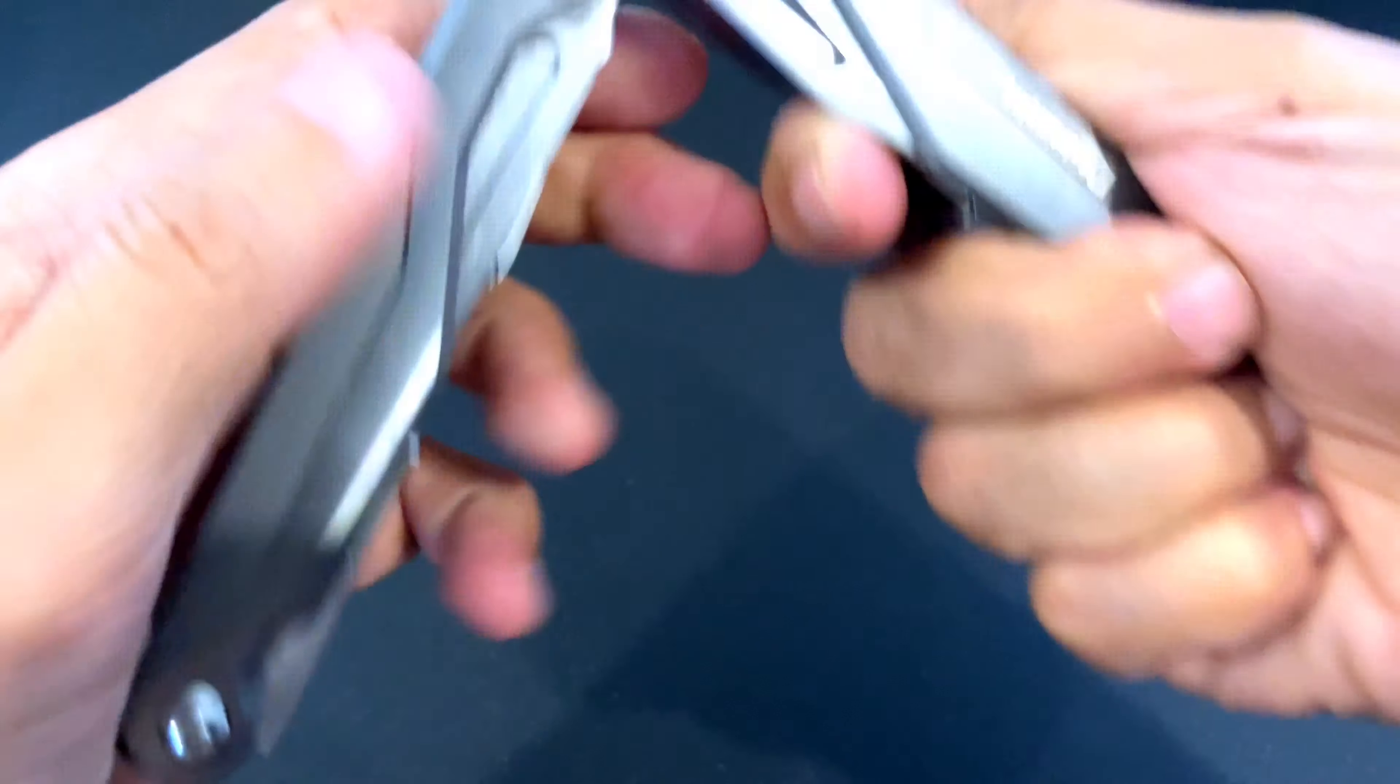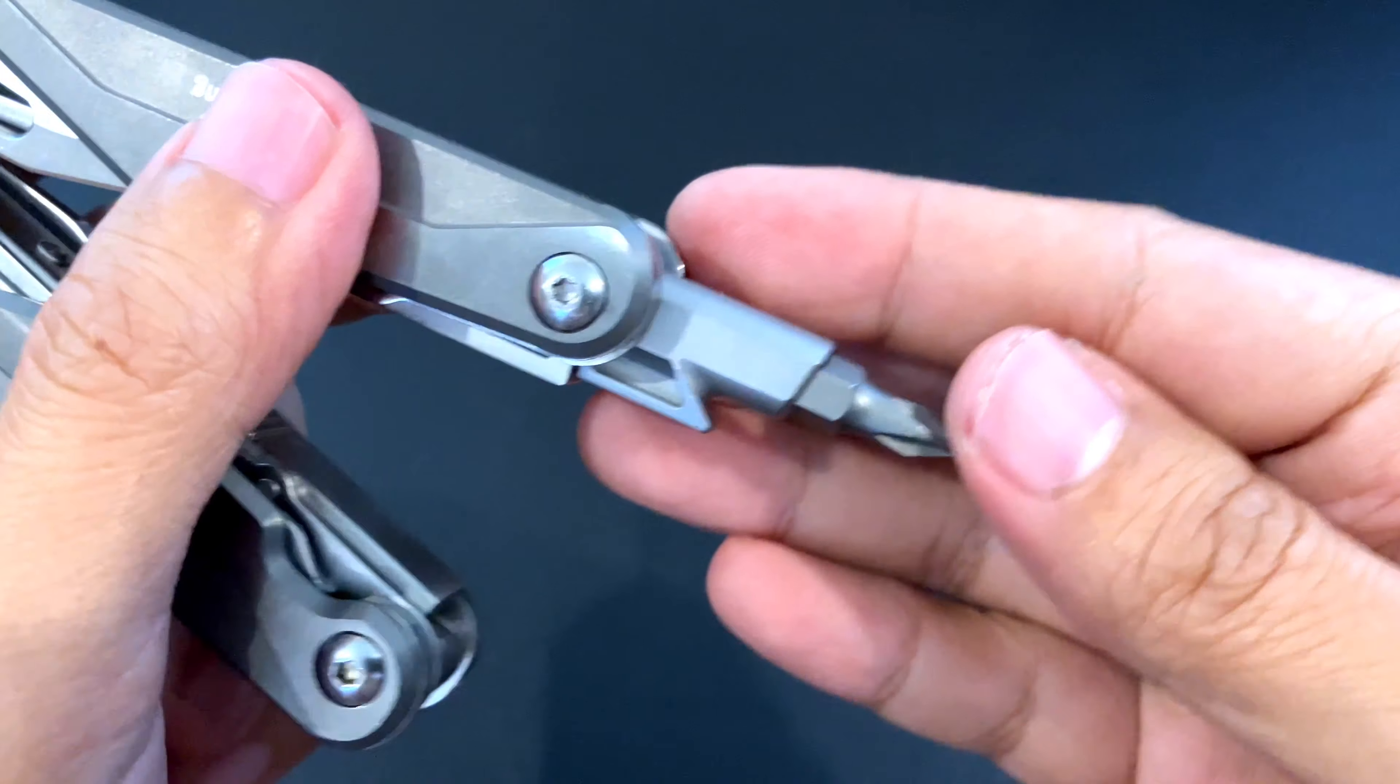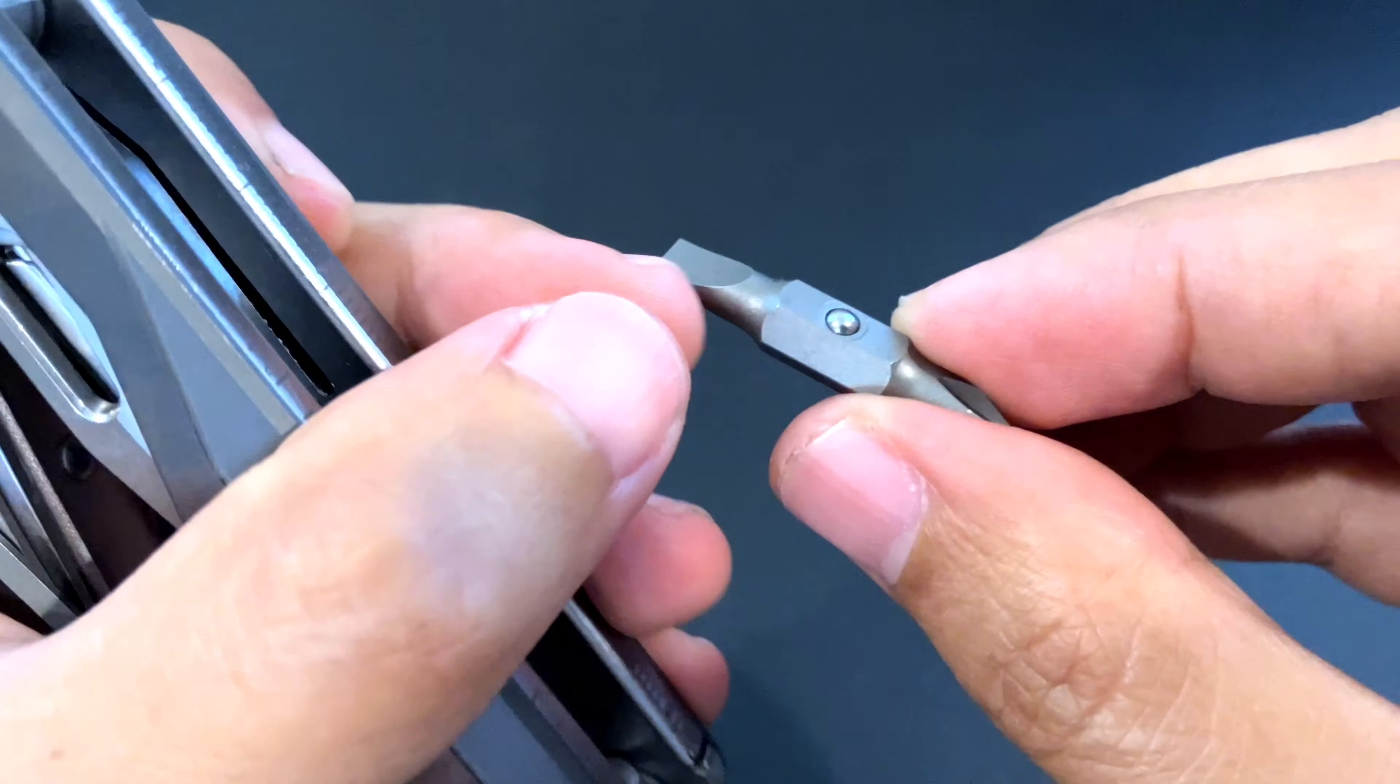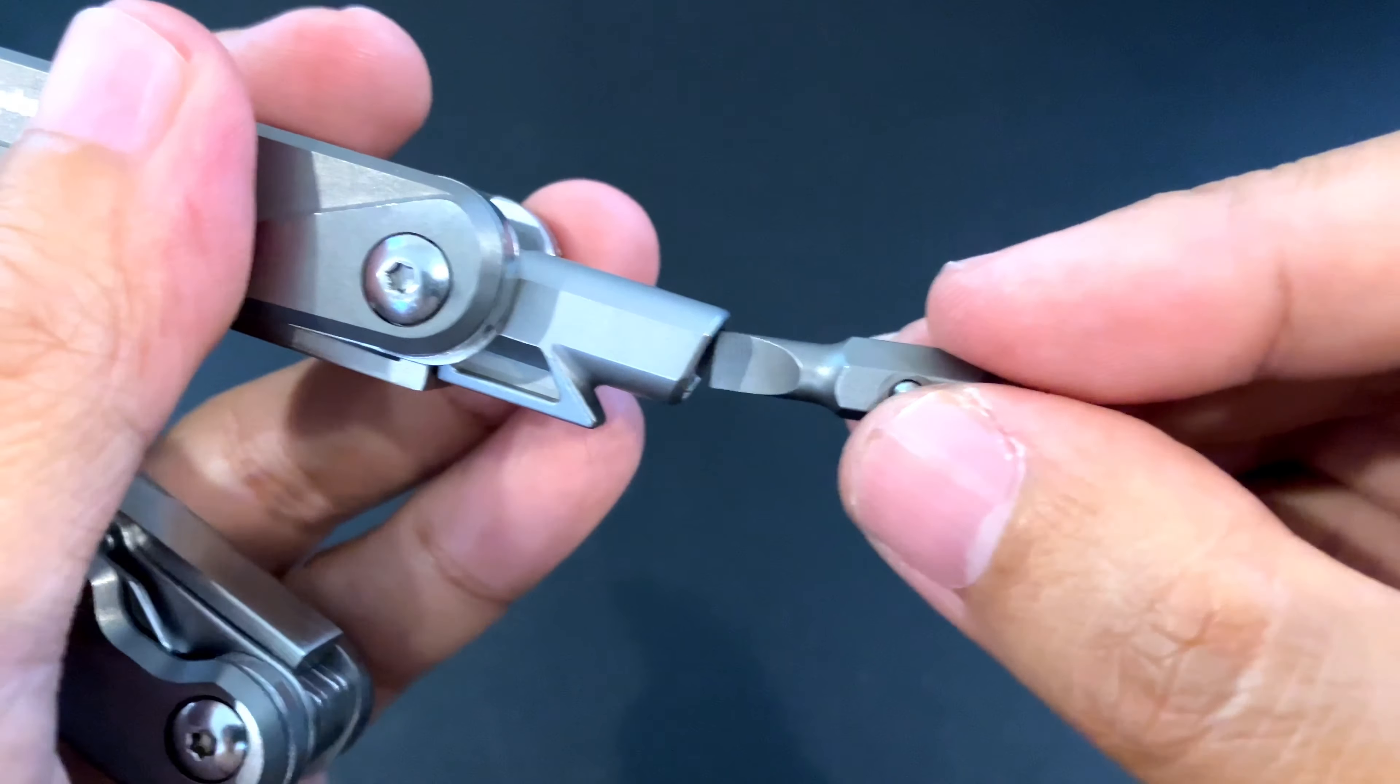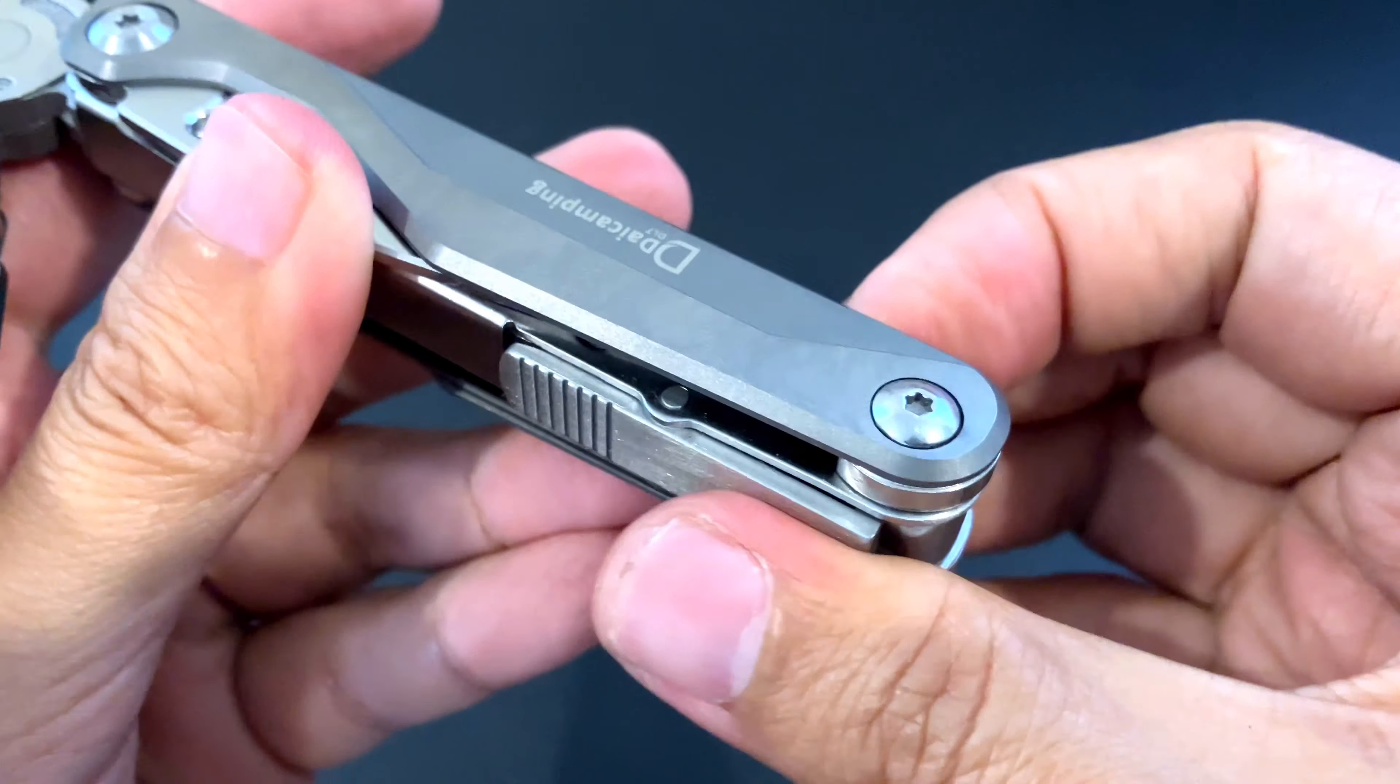On the inside we have the by now familiar bit holder. This is a standard bit holder that holds standard hex bits, 1/4 inch or 6.35 millimeter hex bits. We have both Phillips and flat head. It's held in place by a ball detent and then it's locking. We have the release mechanism here, just press it in and it's closed.